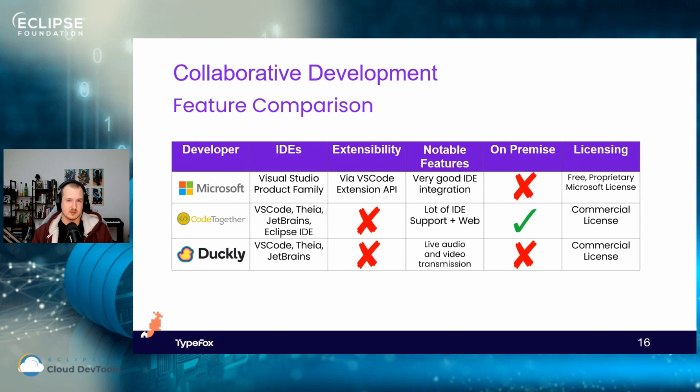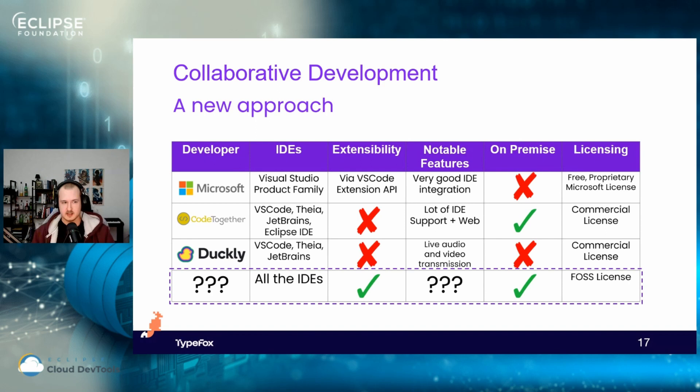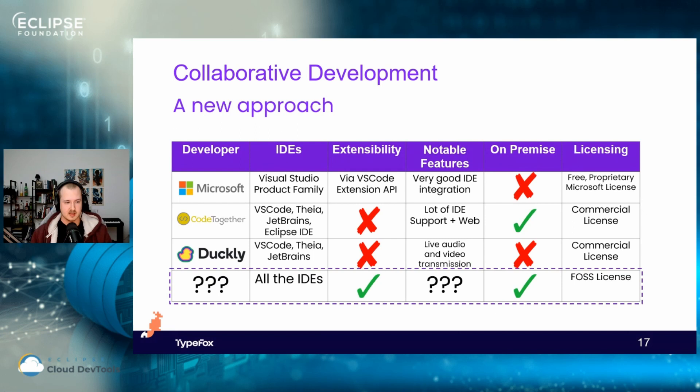Maybe I also need to run on-premise, something only supported by Code Together out of all these platforms. So this brings us to a new development: the idea would be to have some sort of collaborative editing approach where we can support at least all Theia IDEs, maybe even more IDEs — highly extensible so we can hook into whatever is there and extend it to support any use case. We should also be able to run on-premise, because a lot of people just need that. And regarding licensing, we're talking about the Theia project, so we need some sort of free open source license.